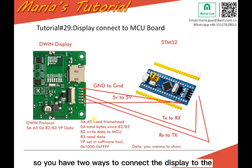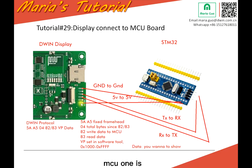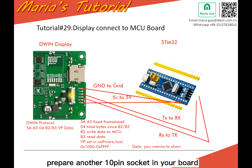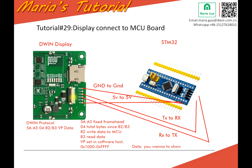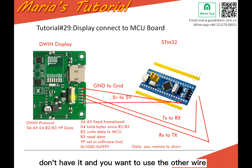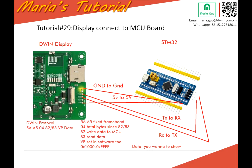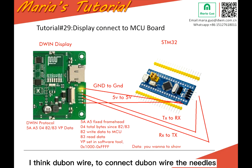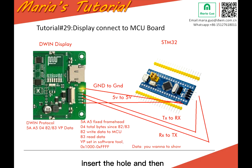You have two ways to connect the display to the MCU. One is to prepare a 10-pin circuit connector on your board — if you don't have it, we sell this connector. But if you don't have it and want to use individual wires, you can use Dupont wires, inserting the needles into the holes and connecting the other end to the MCU.